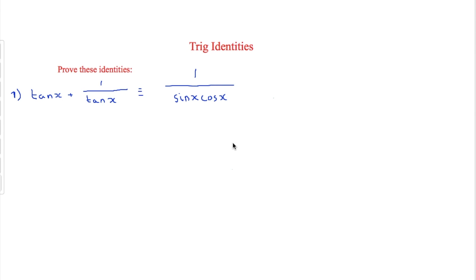The first question we have is: tan x plus one over tan x is always equal to one over sine x times cos x. In order to do this we are going to use both previous identities. The first one is that sine x over cos x is equal to tan x, so we're just going to replace tan x with sine over cos x. We're not going to touch the right hand side at all.